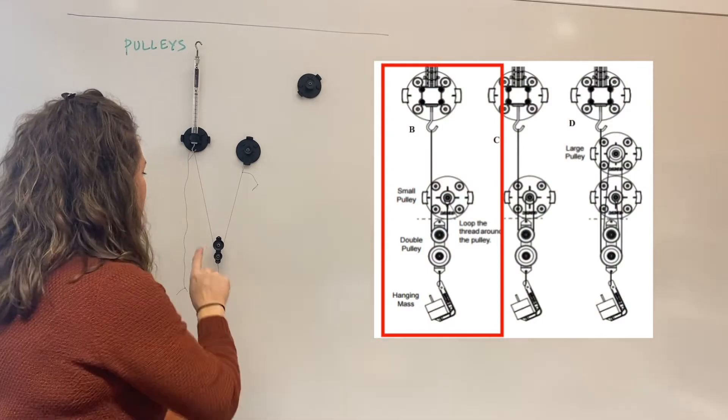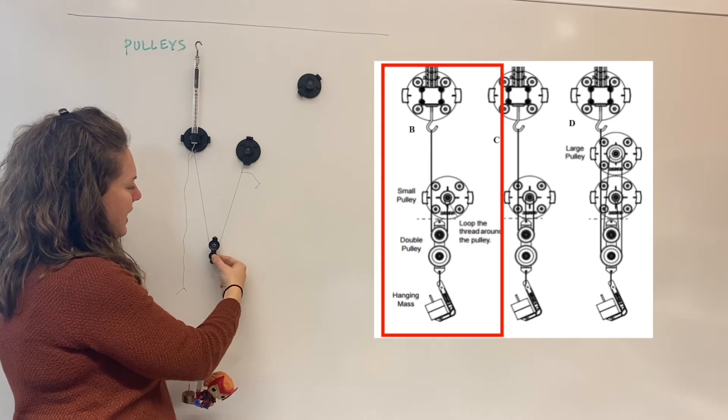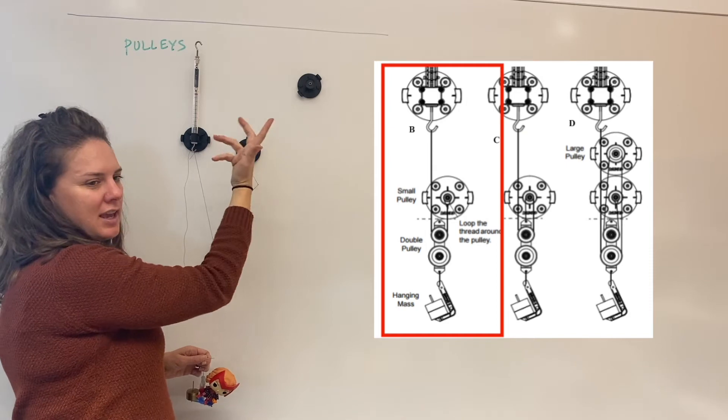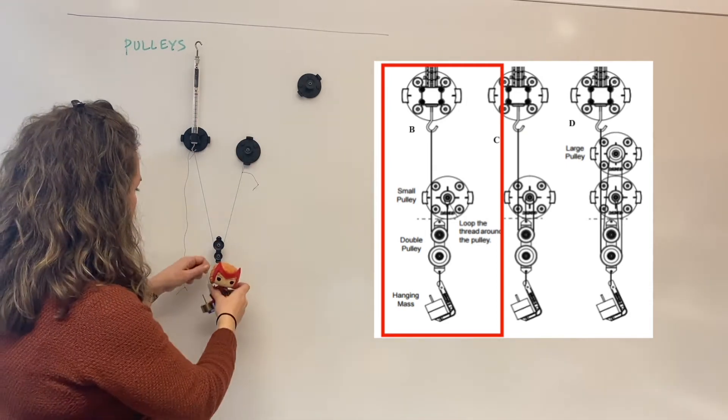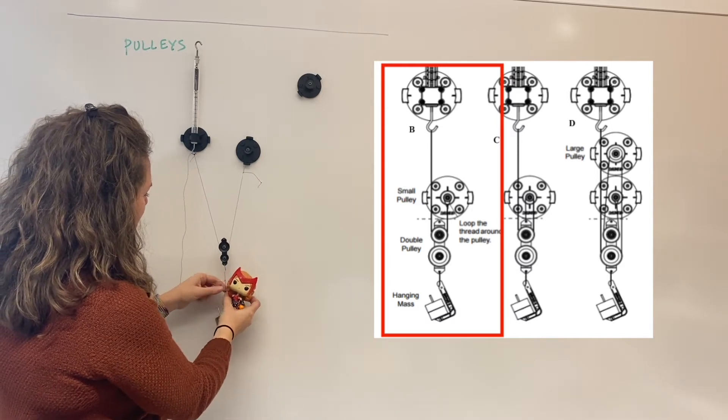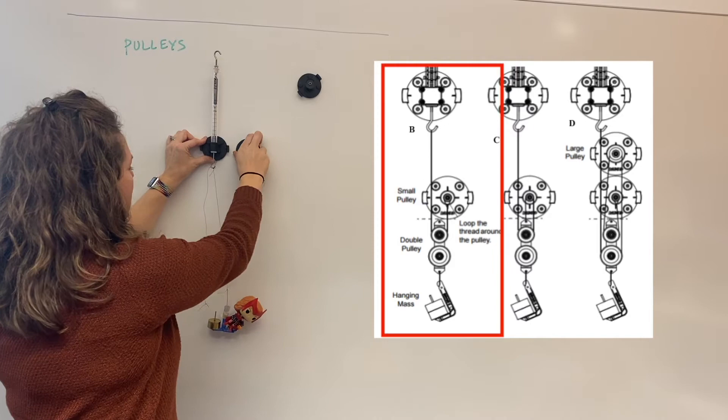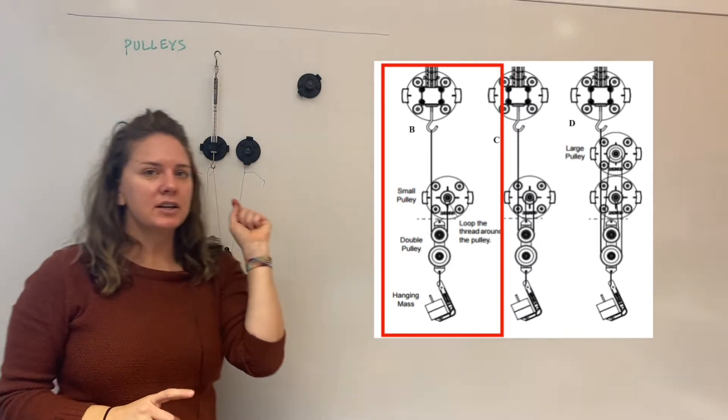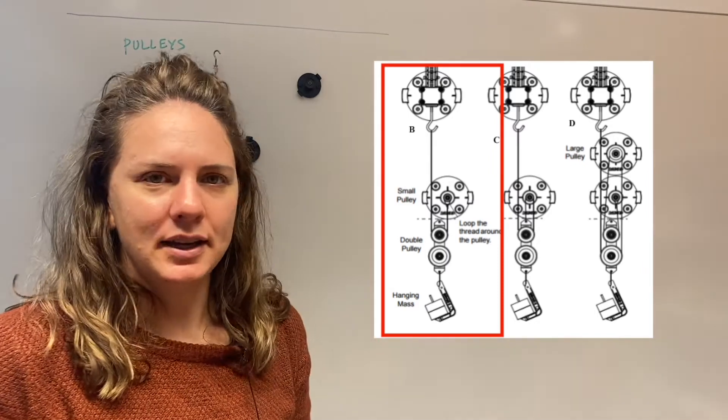So here is situation B. I have my one pulley and I have attached it to the spring scale. And then it's just hanging from what would be the ceiling. Down here, I am going to attach Wanda. There is our Wanda. And now I can read my spring scale here and that spring scale is reading just under one newton this time.